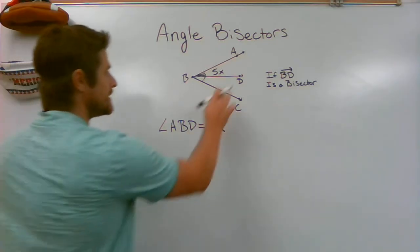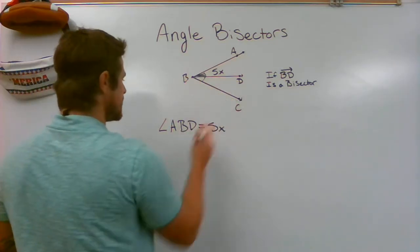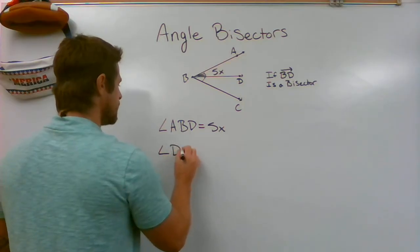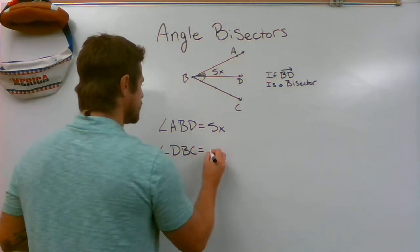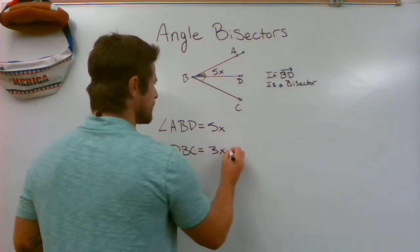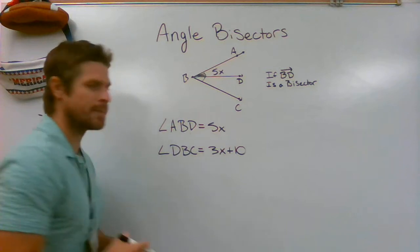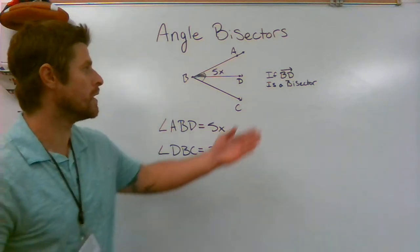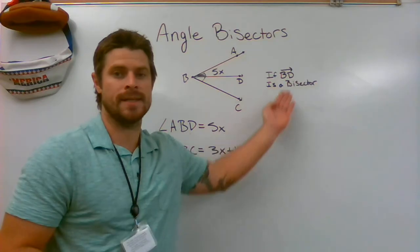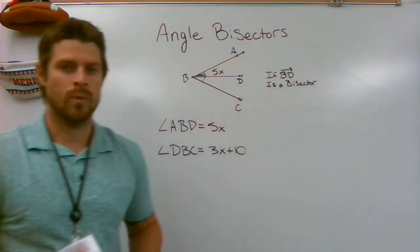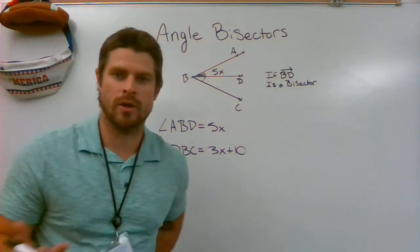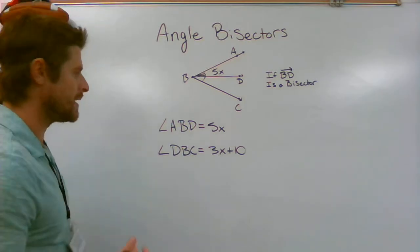and then I'm also told that DBC, angle DBC, is equal to 3x plus 10. Let's say I'm given that information, and I'm also told ray BD is a bisector. Well, I can figure out exactly how large these angles are by using algebra.